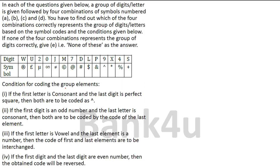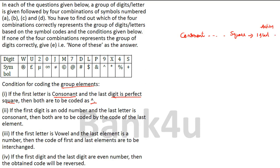Conditions for coding the group elements: Condition 1 — if the first letter is a consonant and the last digit is a perfect square, then both are to be coded as 'cap'. That means both the first consonant and the last perfect square will be coded as cap — so first and last will be coded as cap.